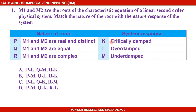M1 and M2 are the roots of the characteristic equation of a linear second order physical system. The two roots M1 and M2 can be real, equal, and complex. The system response will match accordingly.